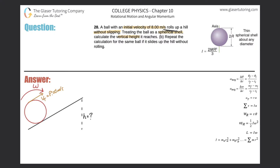Since we're given only the initial velocity of 8 meters per second and asked to find the height, this is generally an energy problem. Conservation of energy is at play, so the energy inherent in the system initially will equal the energy inherent in the system finally.